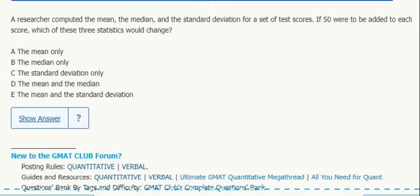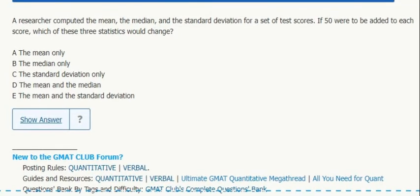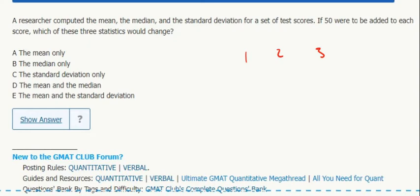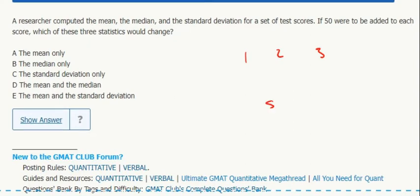Well, the average would change, right? Imagine the numbers are 1, 2, and 3 for the test scores. Isn't that average different from 51, 52, and 53? So the average would change.